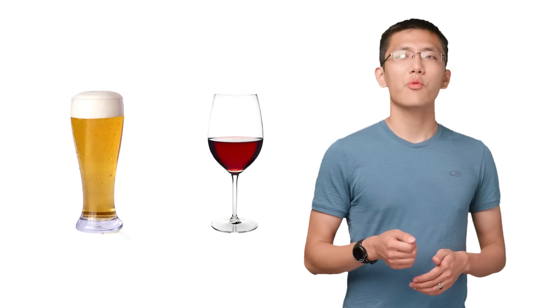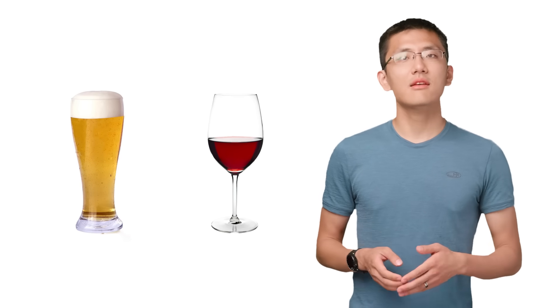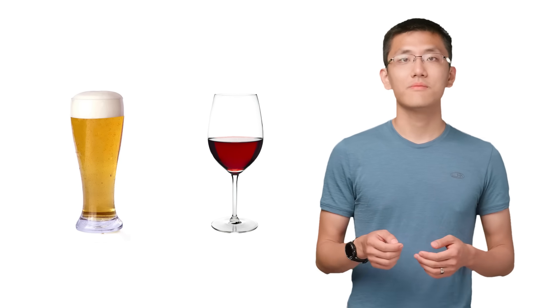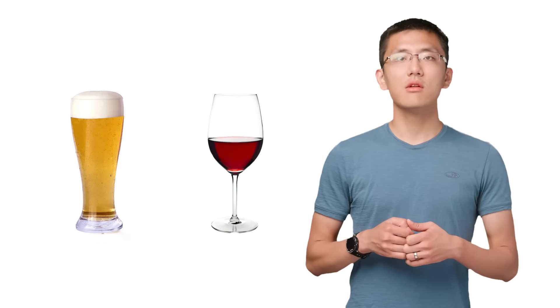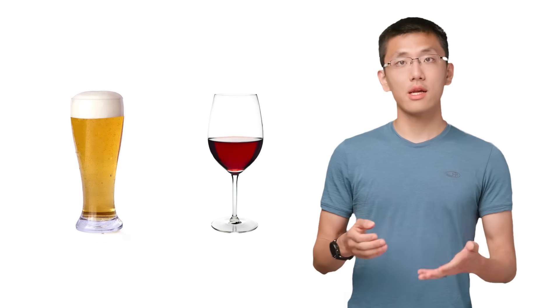Let's pretend that we've been asked to create a system that answers the question of whether a drink is wine or beer. This question answering system that we build is called a model, and this model is created via a process called training.